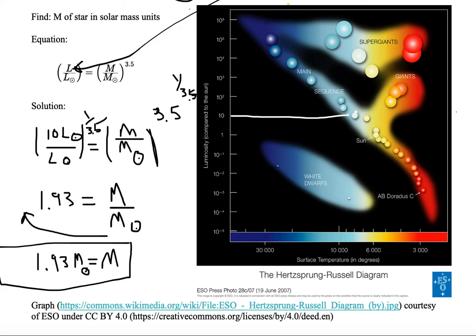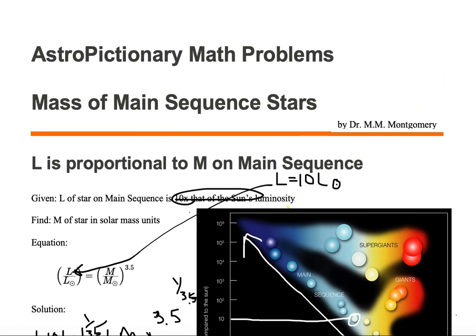And it would be somewhere right around here on the HR diagram. We notice that it's greater than the sun. The sun's mass is one solar mass. We know that we have increasing mass going up the main sequence. So it's logical that this mass of this star, 1.93, is more massive than that of the sun.